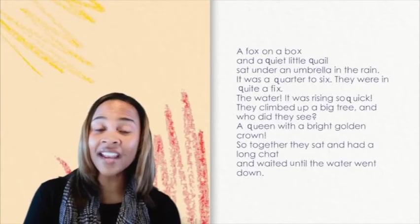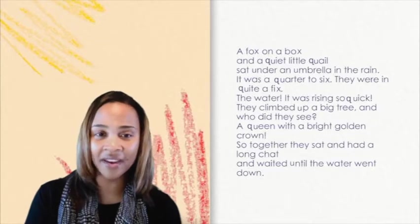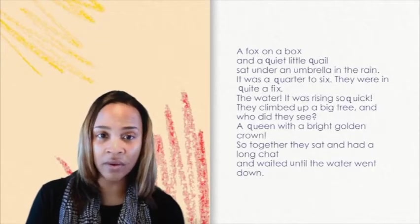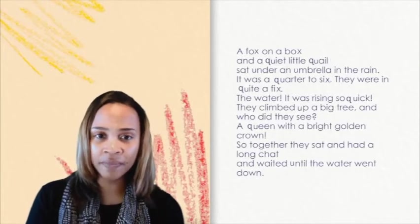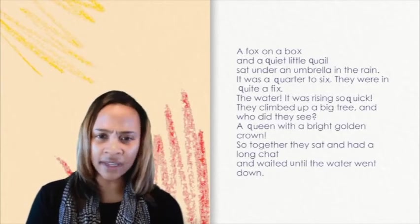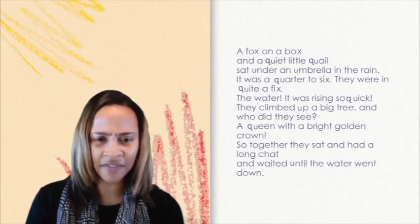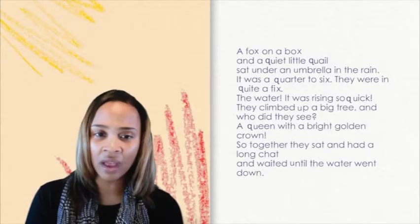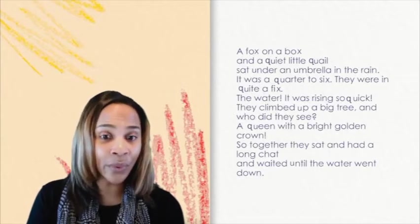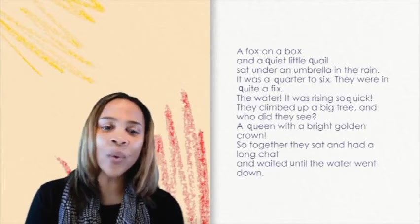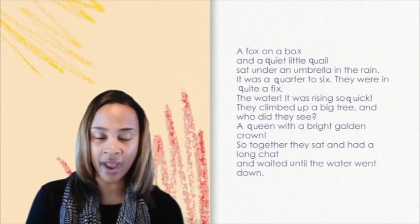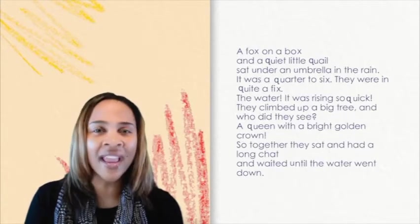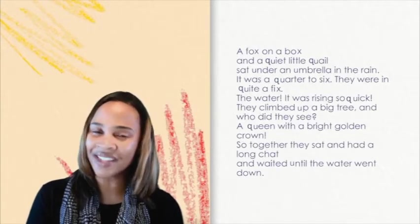A fox and a quail in the rain. A fox on a box and a quiet little quail sat under an umbrella in the rain. It was a quarter to six. They were in quite a fix. The water, it was rising so quick. They climbed up a big tree and who did they see? A queen with a bright golden crown. So together they sat and had a long chat and waited until the water went down.